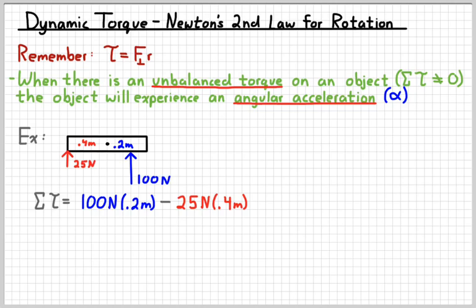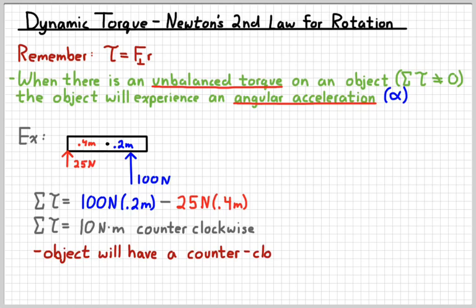So the blue force would be 100 times 0.2, and then the red force would be 25 times 0.4. I'm going to make the blue one positive because that would cause the object to rotate counterclockwise, remember that's positive when we're considering torque. And so crunching those numbers would give you 10, because the blue number is bigger, it would end up being positive, and so it would have a net torque that is counterclockwise of 10 Newton times meters. And so that's going to cause this thing to have a counterclockwise acceleration and start rotating and speeding up.